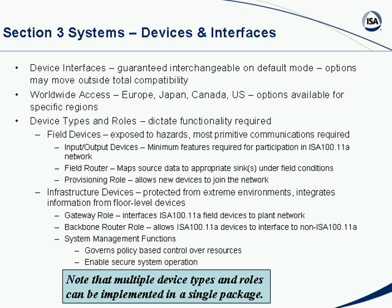We have defined what are called field routers — they map source data into what the receiver expects, existing under field conditions. The provisioning role allows new devices to join the network. Above field devices, we have what are called infrastructure devices — these are somehow protected from the extreme environments.